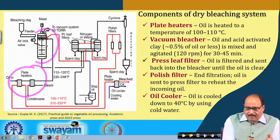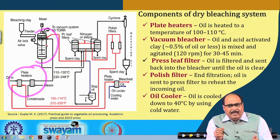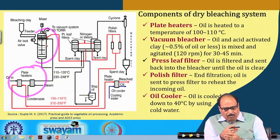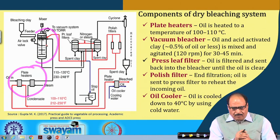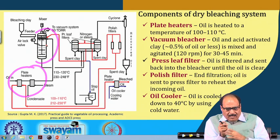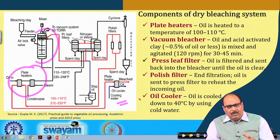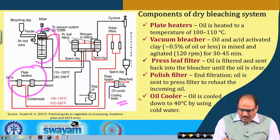From the bleacher, a press leaf filter removes the adsorbent-mixed oil and sends it back until the oil is clear — that is, until all the added adsorbent is removed. Finally, a polishing filter removes any remaining suspended particles, after which the oil is sent through a heat exchanger to reheat the incoming oil, and a cooling system cools the oil to 40 degrees Celsius using cooled water.